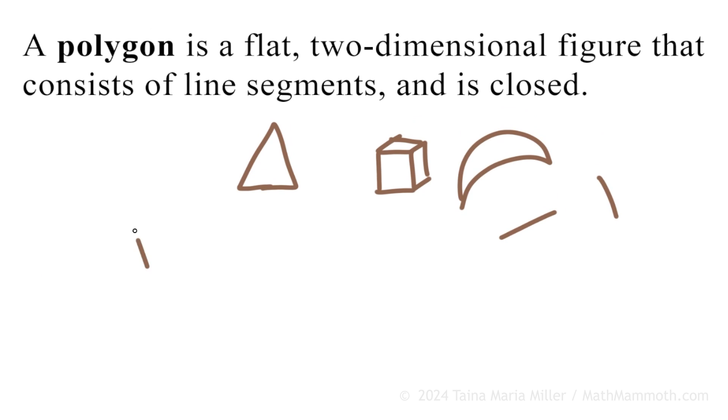How about this one? Yes, it's a polygon. Imagine that these are all straight line segments. It's a polygon. And this one? Again, imagine that my drawing was perfect. Yes, it is a polygon. A polygon can cross itself, OK? It's flat, two-dimensional, it consists of line segments, and it's closed, so all is good here.